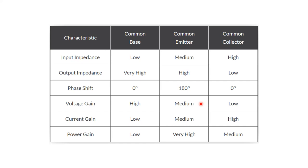To use the transistor properly you need to remember this comparison table. For example, if you need to design an amplifier, you need to know the characteristics of each configuration to choose the suitable one. Or if you want to use the transistor as a switch, you need to select the right configuration. The input impedance for common base mode is very low, for common emitter it is medium, and for common collector it is very high.